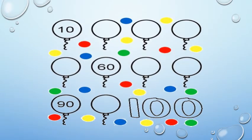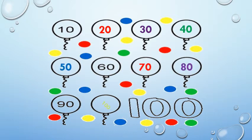Let's count by 10: 10, 20, 30, 40, 50, 60, 70, 80, 90, 100. Again: 10, 20, 30, 40, 50, 60, 70, 80, 90, 100.